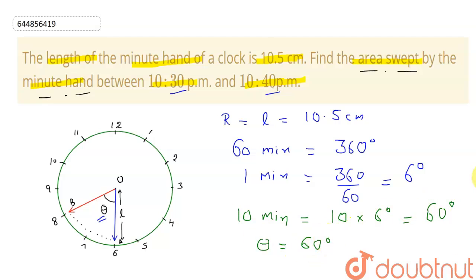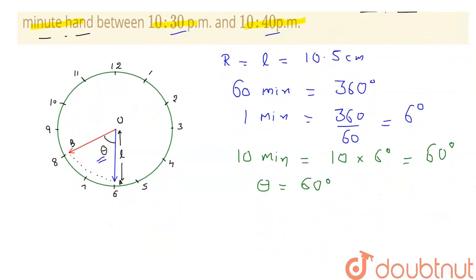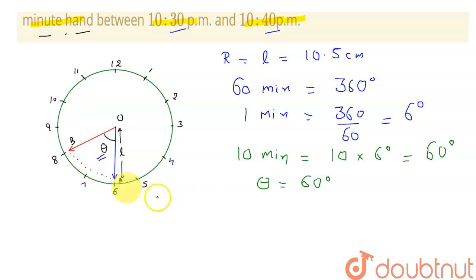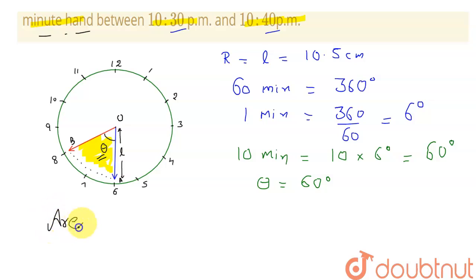Now I can use the formula for the area of a sector to calculate the area swept by the minute hand from 10:30 to 10:40. The area of a sector is given by: pi r squared into theta, divided by 360 degrees.